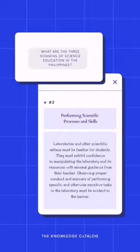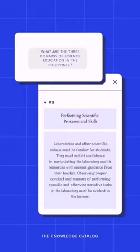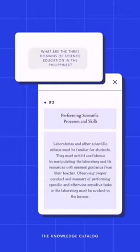Inside the laboratory, students must be confident — they shouldn't feel like they're stepping on eggshells. Observing proper conduct and manners when performing specific and sensitive tasks in the laboratory must be evident in the learner. Inculcating a process-oriented approach must be done orally or in writing through post-laboratory reports and other means. We can ask them to keep a laboratory notebook where they put their computations, observations, and copies of their activity sheets — to practice building a good laboratory portfolio. All of this is aimed at developing confidence in performing scientific processes and skills.